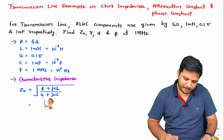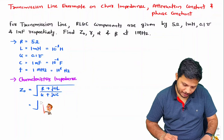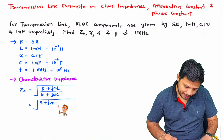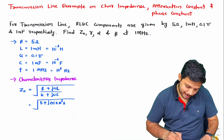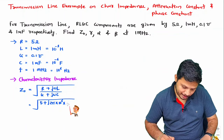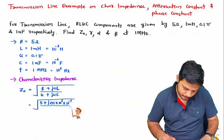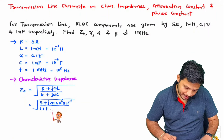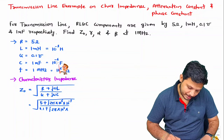The characteristic impedance formula is Z0 = sqrt[(R + jωL) / (G + jωC)]. Substituting values: the numerator is 5 + j·(2π × 10^6 × 10^-3), and the denominator is 0.1 + j·(2π × 10^6 × 10^-6).